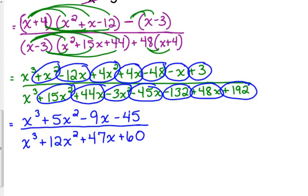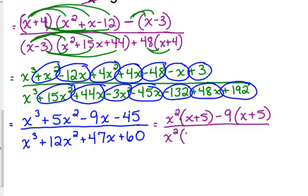All right. So the only thing left for us to do is to attempt to factor the top and the bottom. What type of factoring would this be? Grouping. Marvelous. The numerator looks great. We can take out an x squared and that will give us x plus 5. We can take out a negative 9 and that leaves us with x plus 5. In the denominator we can take out an x squared and that leaves us with x plus 12.